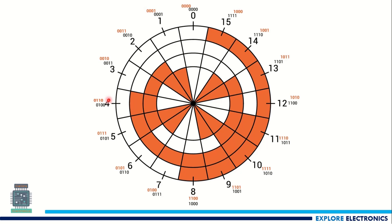If you see this pictorial representation, values 0 to 15 are represented with black colored binary numbers and orange colored gray numbers. The white cells represent zeros and the orange cells represent ones. Comparing 0 and 1, you will see only one orange color difference between the two.